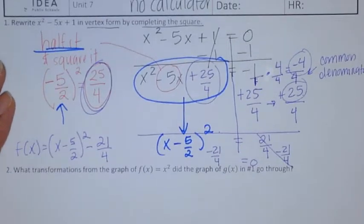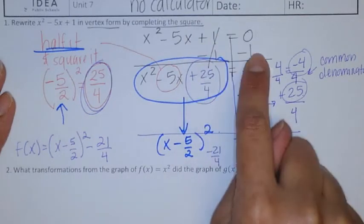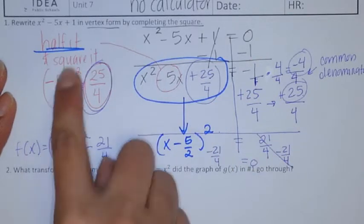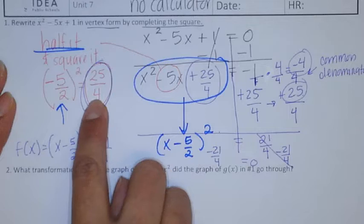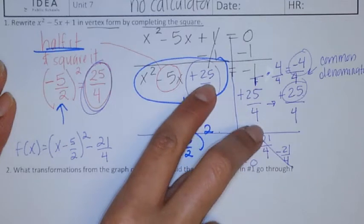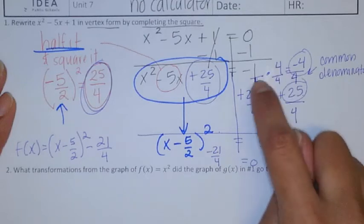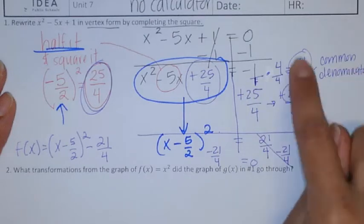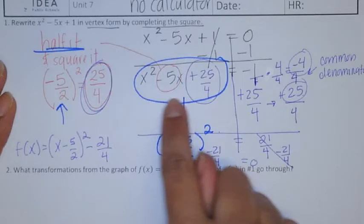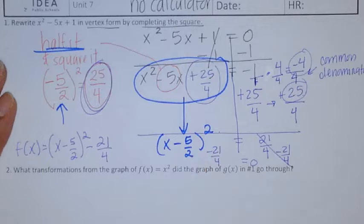To go over it again, we first take the non-perfect constant and move it over to the other side with inverse operation. We leave a blank. The B, we half it and we square it. Once we half it and square it, that's our missing constant, our perfect constant that we have to add to both sides. You know, a whole number and a fraction, we've got to make it into a common denominator in order to add them together. This is already your perfect square, so you write it as a product of its two sides. It's half of the B goes here. So that's vertex form.